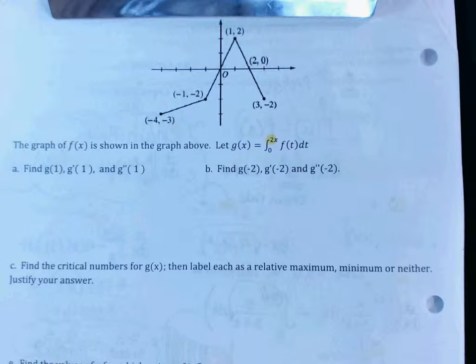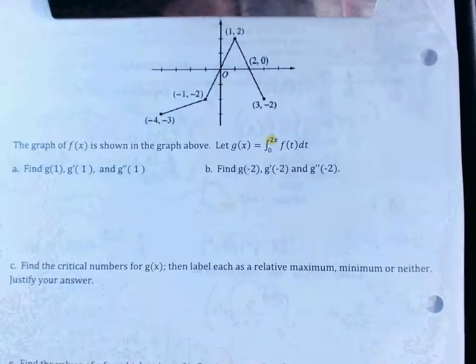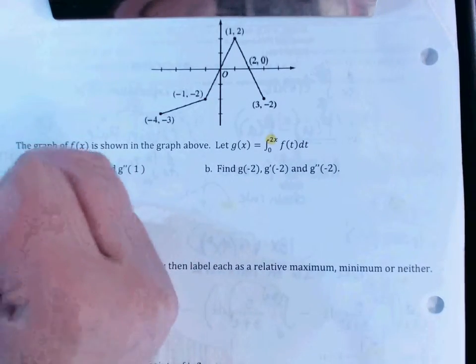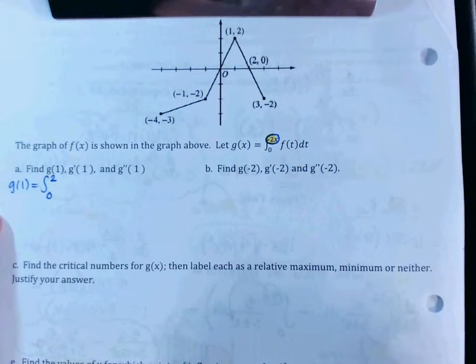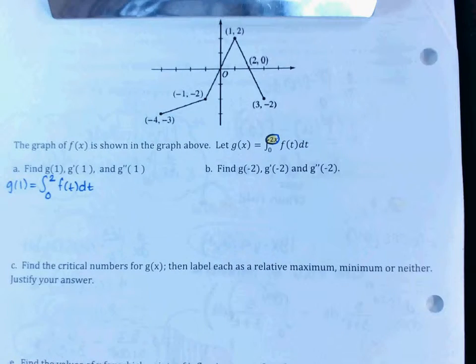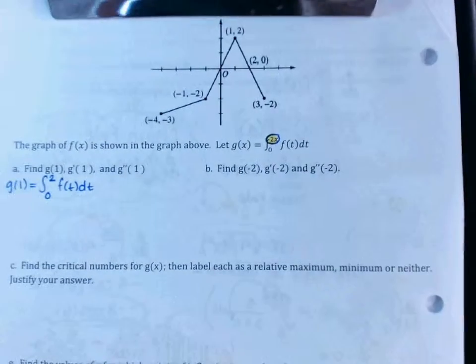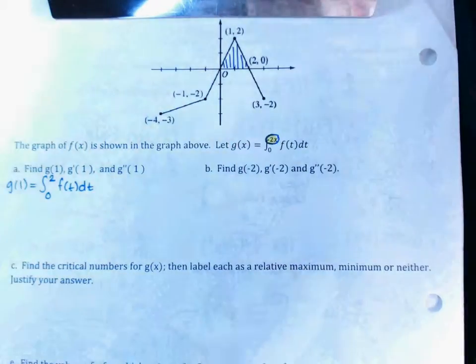Let's start with g(1). When I plug in 1, where my 2x is, the integral is going to be from 0 to 2 — because you're plugging in 1, but there was already a 2 with the x. So g(1) equals the integral from 0 to 2 of f(t) dt. Shade from 0 to 2 on your graph — that's a little triangle. Using ½ base times height: base is 2, height is 2, so the area is 2.